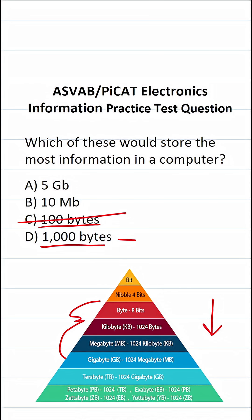So 1,000 bytes is roughly 1 kilobyte, and there are 1,024 kilobytes in a megabyte. So 10 megabytes is significantly bigger than 1,000 kilobytes, so that's not correct.